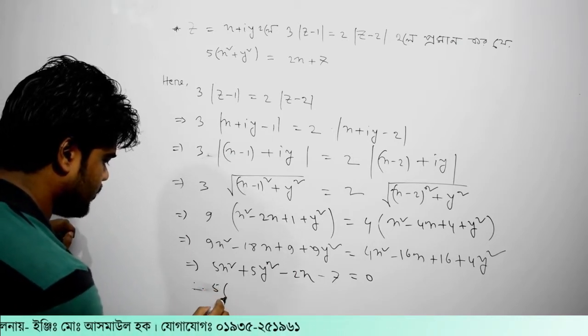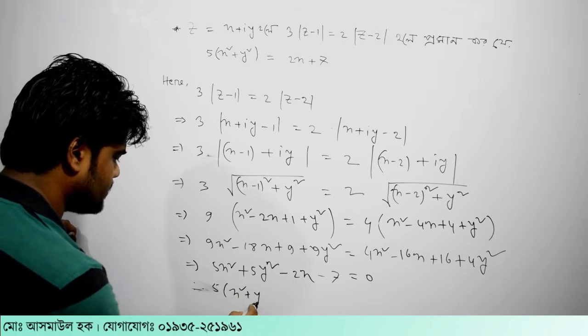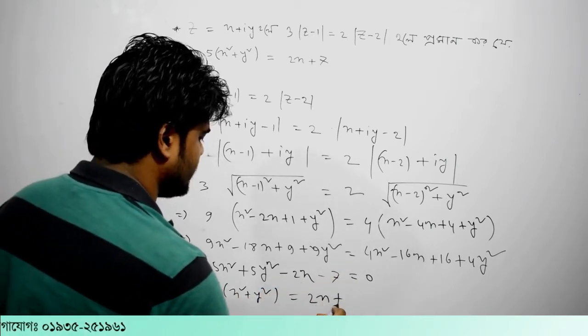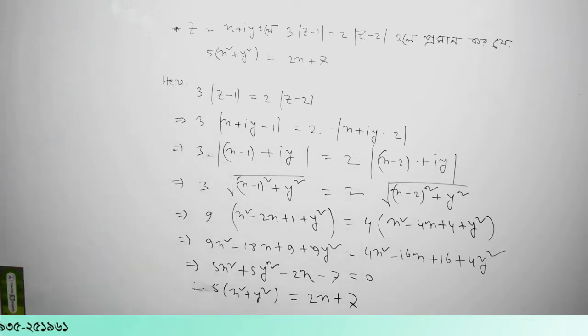x squared plus y squared. And this is the same way you can get 2x plus 7. That's why our uncle is very good.